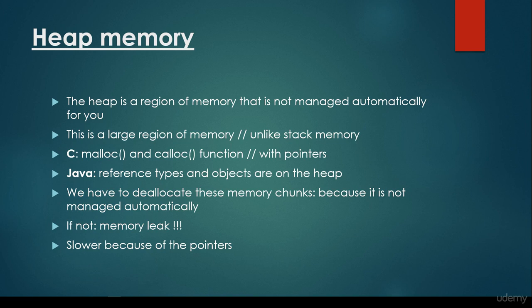We have to deallocate these memory chunks in C++ and C, because heap memory is not managed automatically. Stack memory is managed by the operating system, so we don't have to bother about it — local variables are popped off the stack no matter what. But for heap memory, we have to manage its contents, because the operating system is not going to do it for us. If we are not going to use an object, we have to remove it from the heap. That's why the Java garbage collection operation came to be — to get rid of objects from the heap that are no longer being used.